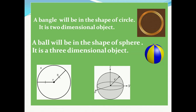What is the difference? A bangle will be in the shape of a circle whereas a ball is in the shape of a sphere. Both circle and sphere will have a center, and the distance from the center to the boundary — in case of a circle or a sphere — that distance is the radius. In both cases, circle and sphere, the radius will be the same.